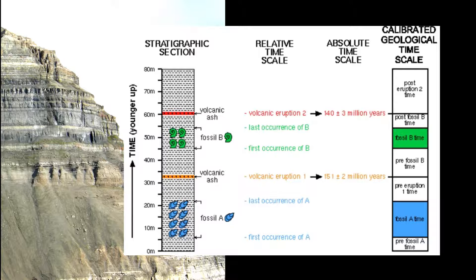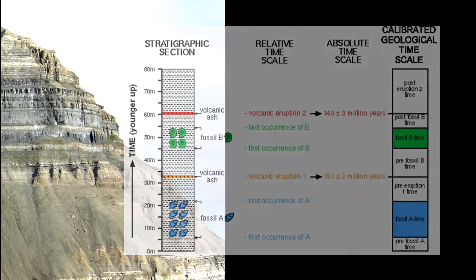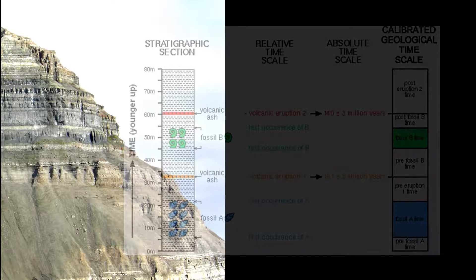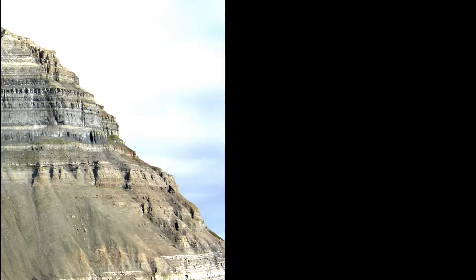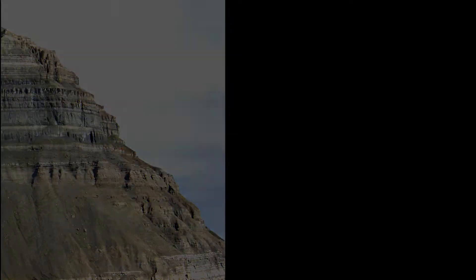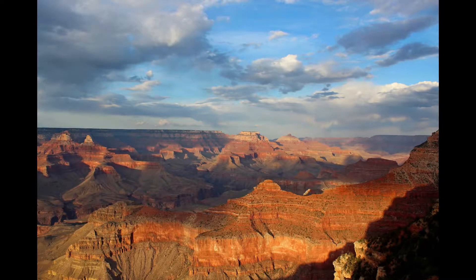Using the law of original lateral continuity, you can also find the same deposits in similar material in different places and apply the age already established, so you don't have to search for new ash layers in the next area unless you are unsure the deposits were formed at the same time.